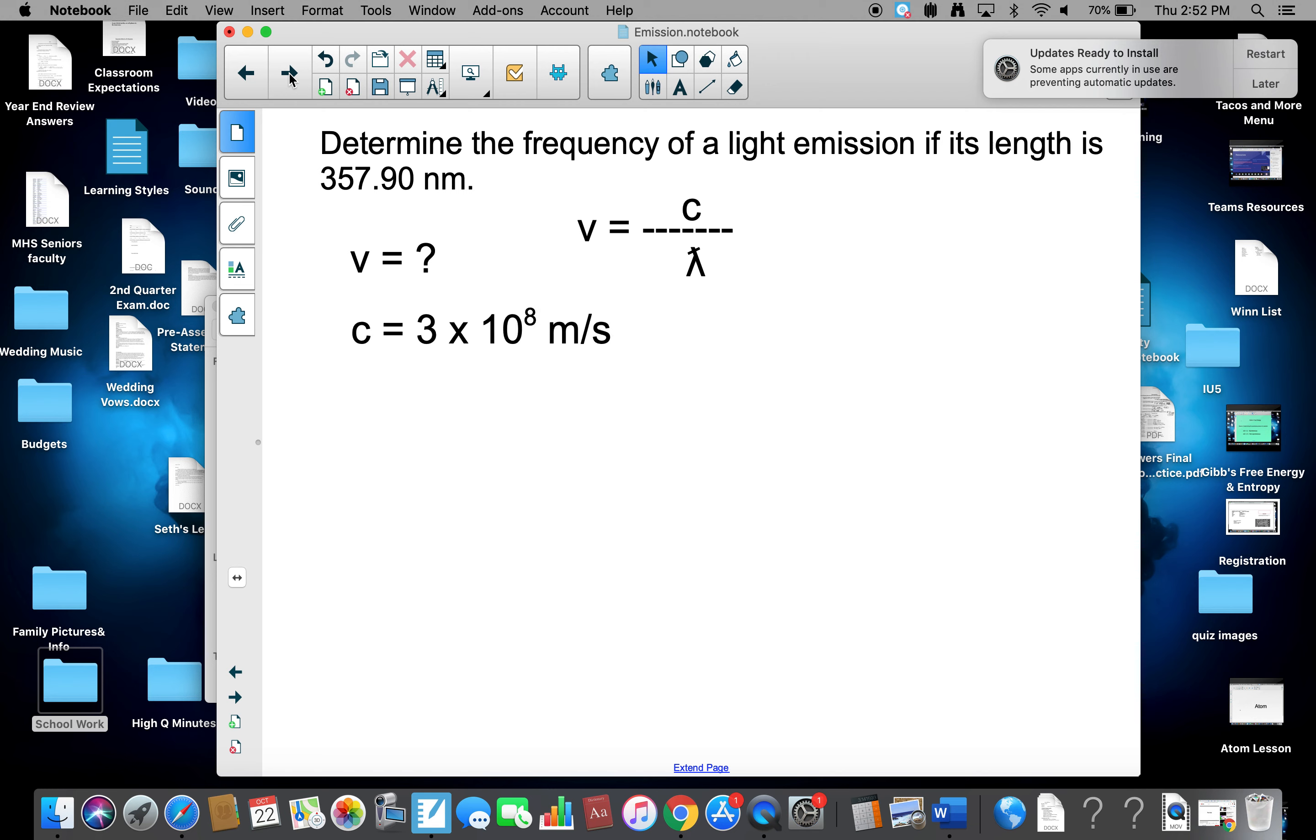We know C, the speed of light, is 3 times 10 to the eighth meters per second. Lambda is 357.90 nanometers. Look at those. Those aren't the same units, so we're going to have to convert them.